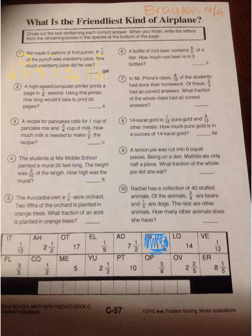So number 2. A high speed computer printer prints a page in 1/6. So 1 page is 1/6. Using this printer, how long would it take to print 30 pages? So 1/6 times 30 would give you 30 divided by 6, which is 5 seconds. And that's going to be right here.